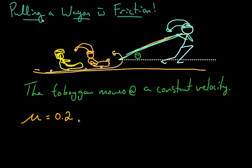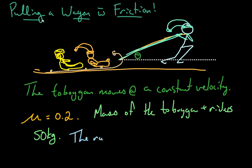So mu is 0.2. And the last thing we're going to say is the mass of the toboggan and riders is, I don't know, 50 kilos, let's say 50 kilograms. And the last thing we need to say is the rope is angled at 30 degrees to horizontal. So this is a 30 degree angle in here.